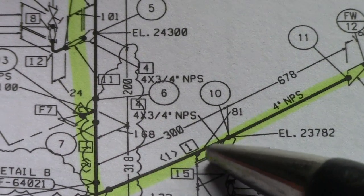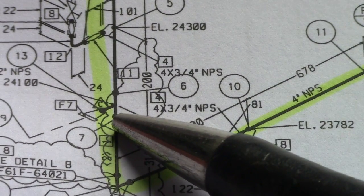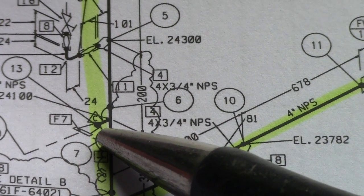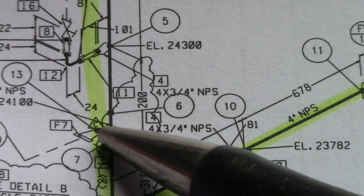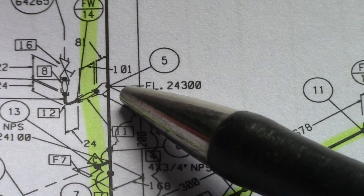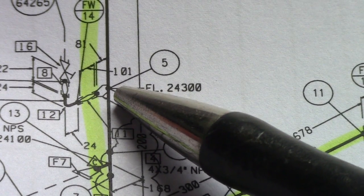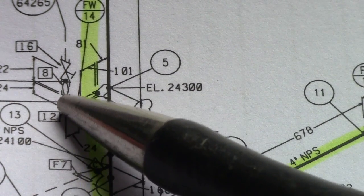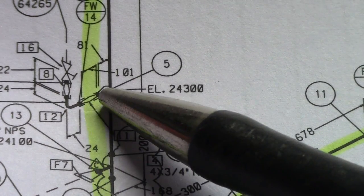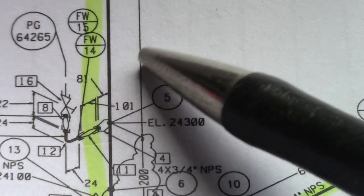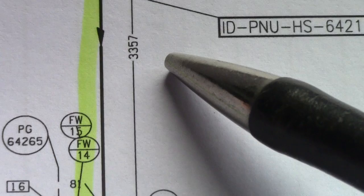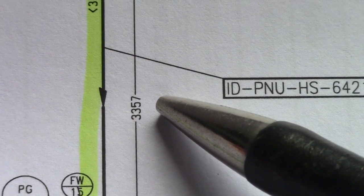This is flange. Check all the flanges, specification, reducers, elbows - check the orientation. So this is the flow direction.